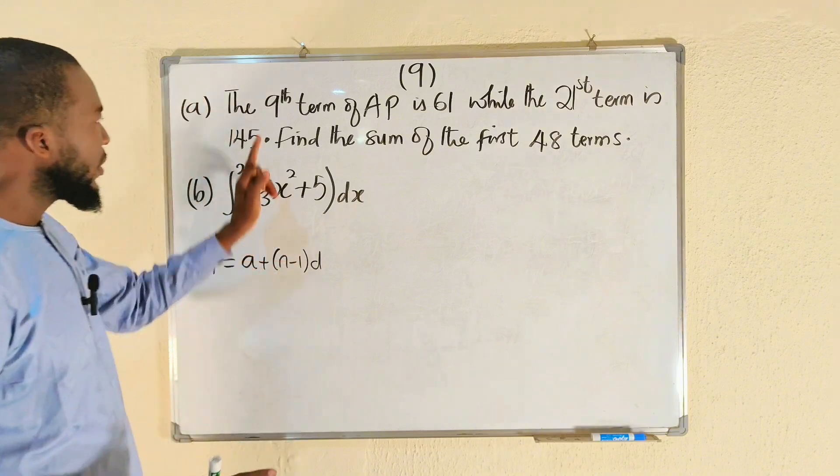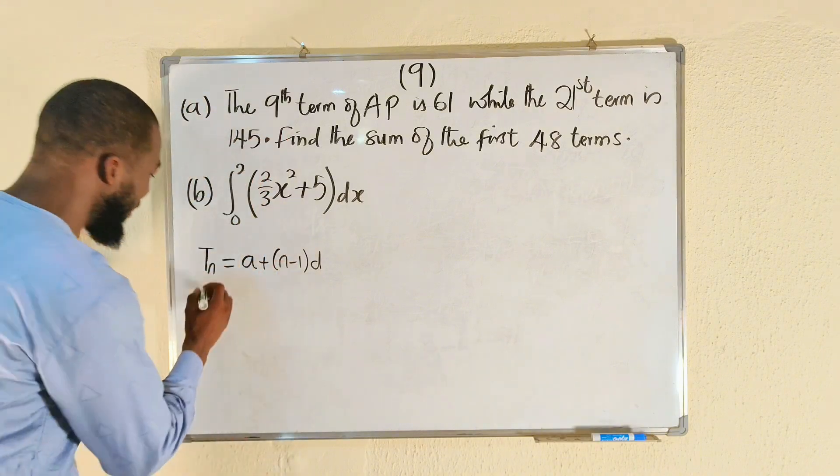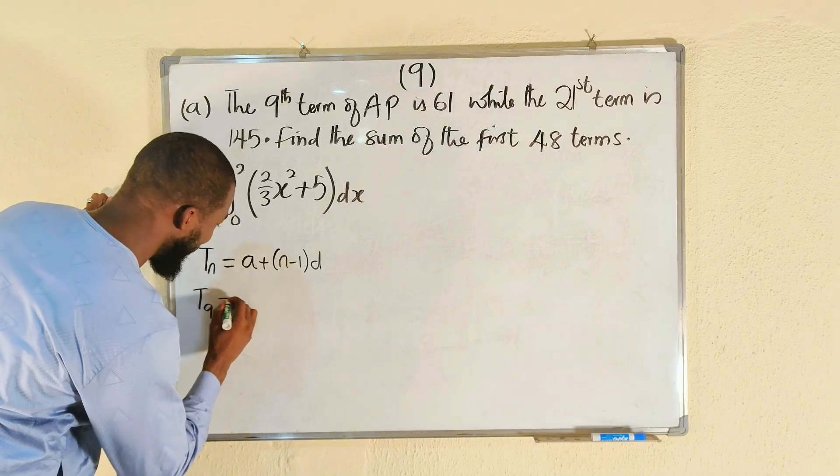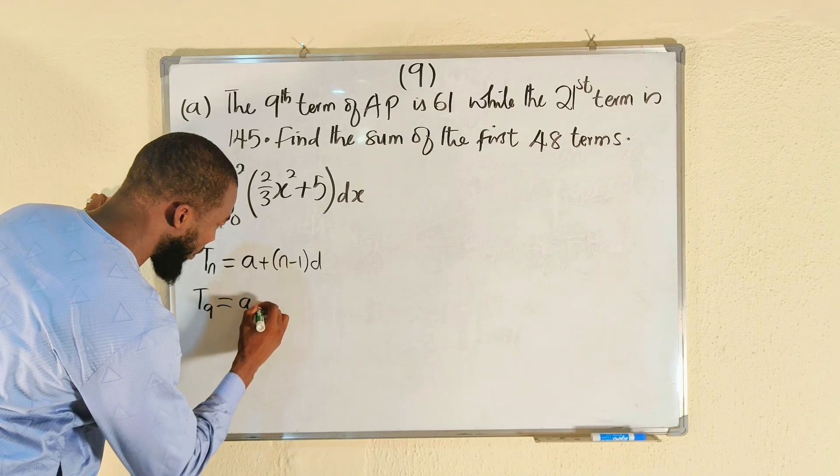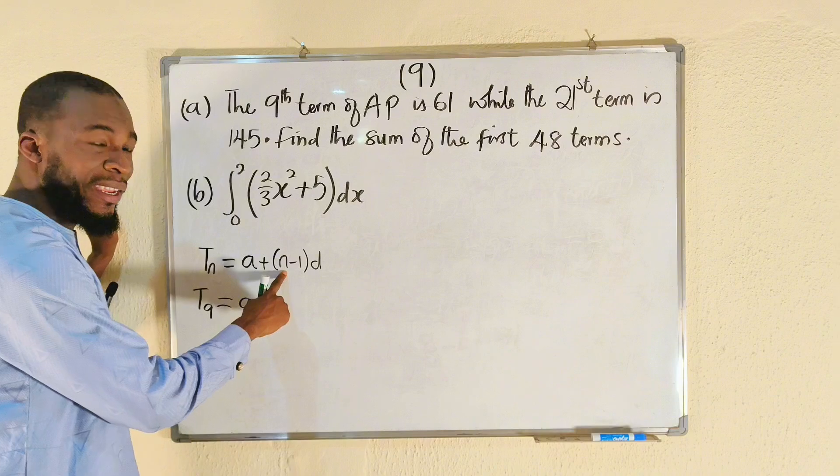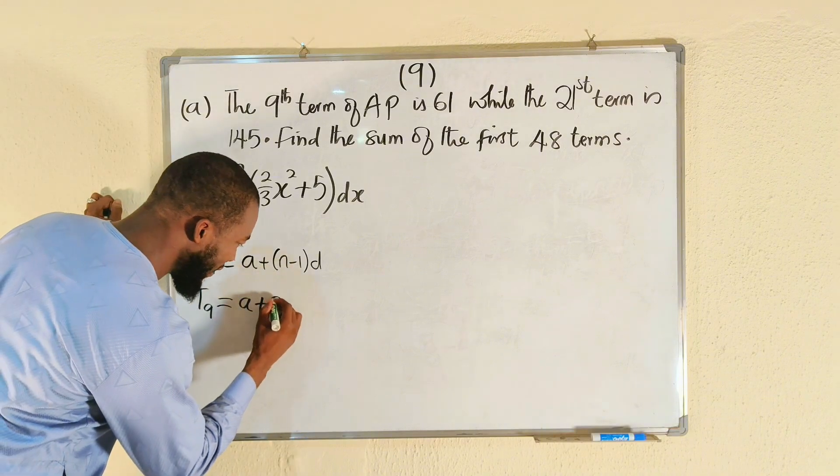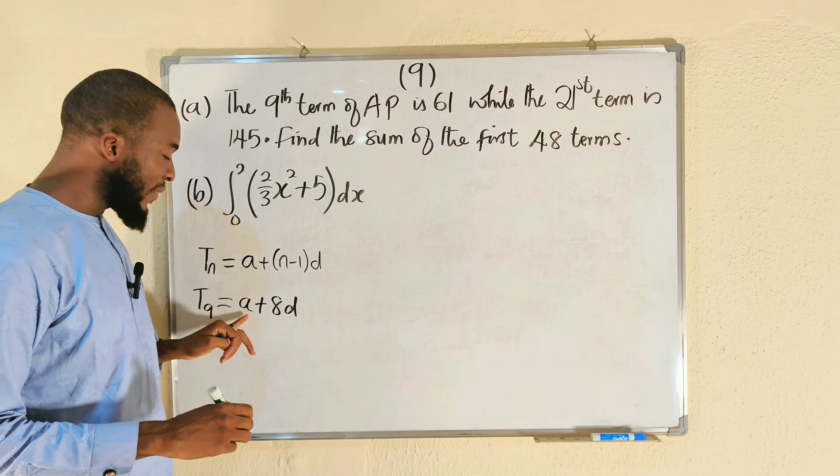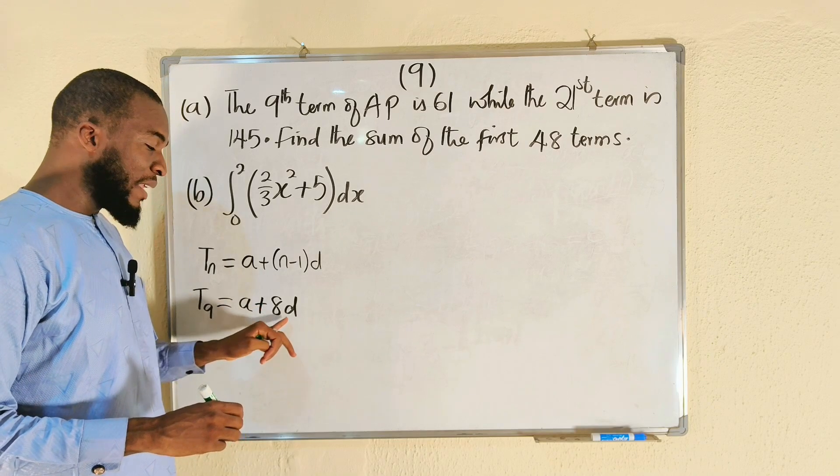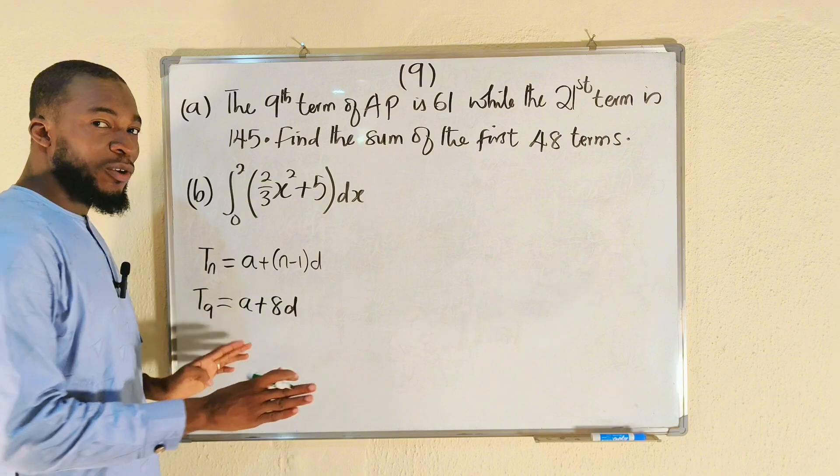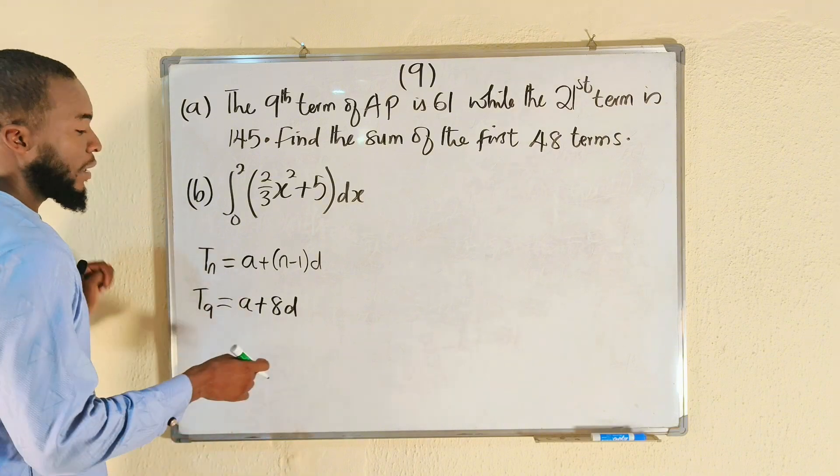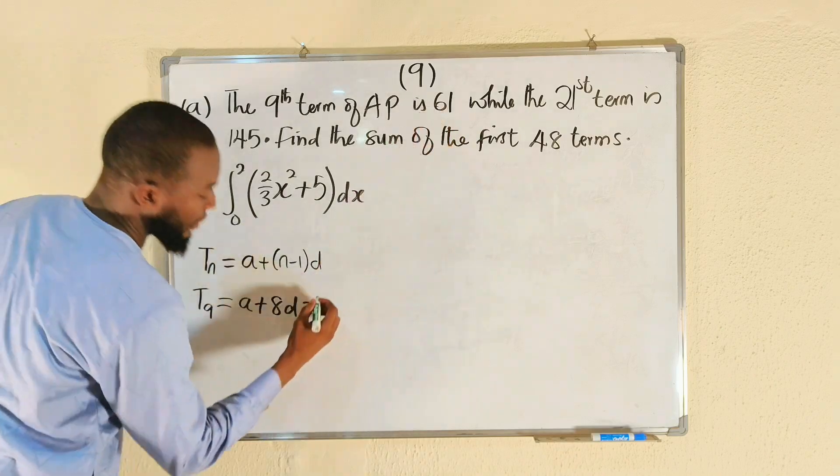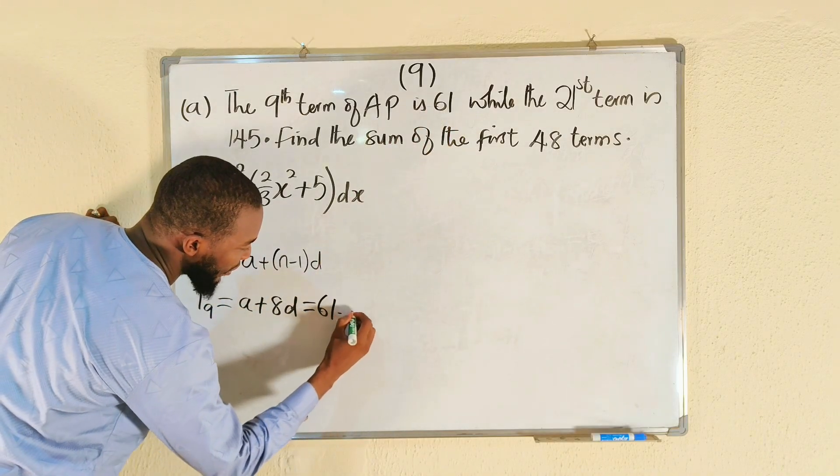For term number nine, T9, where n equals 9, this is equal to a, the first term, plus n which is 9 minus 1, which is 8, multiplied by d. So term number nine is equivalent to the first term plus 8 multiples of the common difference, because d is the common difference. They said this is equal to 61, so we have our first equation.